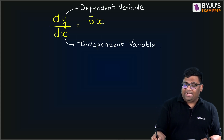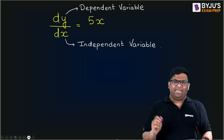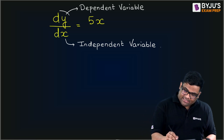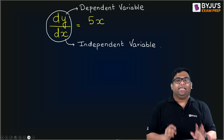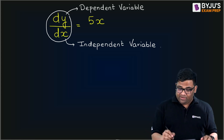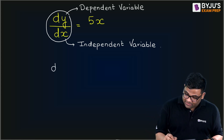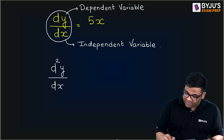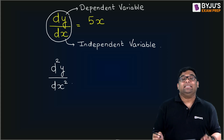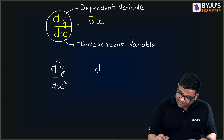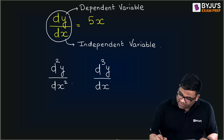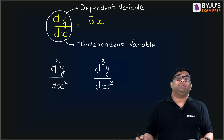When I write dy by dx, this is a first-order differential equation. When I write the double derivative of y with respect to x, this is second order. And if I write the triple derivative, this is third order.